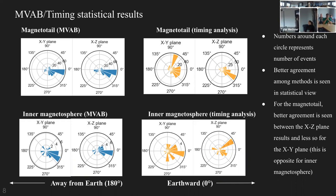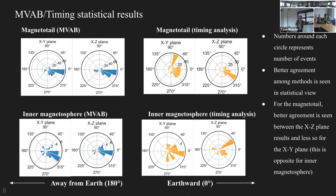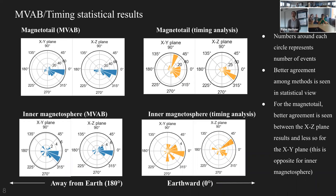There are outlier populations whose cause we don't yet know — that's one reason we want to investigate the differences further. We're also looking at other coordinate system techniques that provide better agreement with timing analysis, including one where you cross the L vector from LMN coordinates with the derived current vector J to obtain a new normal vector estimate.